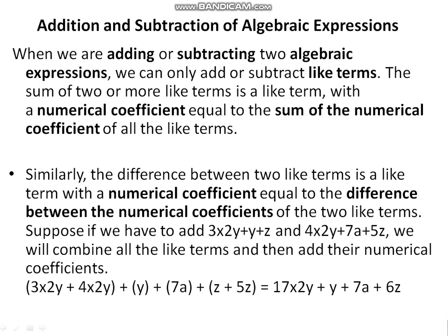Here is an example: adding 3x²y plus y plus z and 4x²y plus 7a plus yz. We group like terms: 3x²y plus 4x²y gives 7x²y. Then the y terms, 7a, and z plus 5z gives 6z. Combining all like terms, we get the final result. In this way, we can add or subtract algebraic expressions — the variable and power must be the same.